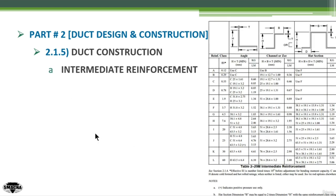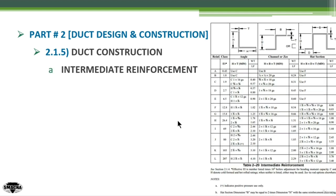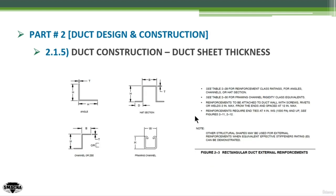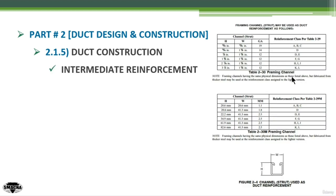We can use the reinforcement class as the entry point to get all the details. For example, if I'm going to use reinforcement class F, this will give you angle details of specific dimensions, a Z-channel of specific dimensions, and a hat section of specific dimensions. And in Table 2-30, which was referred to in the reinforcement requirement notes — see Table 2-30 for framing channel rigidity class equivalents — going back to this table, which is Table 2-30 for framing channel or slotted channel, this table gives you the dimension equivalents of the slotted channel and the gauge requested based on the reinforcement class, represented in the last column.